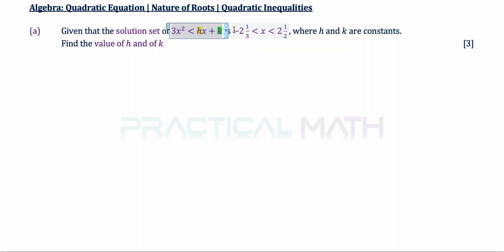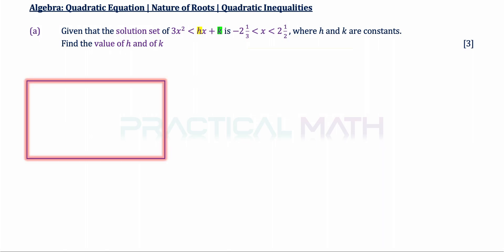Usually we are given a quadratic inequality and we find the solution set. Now we are given a solution set, we work backwards to find the quadratic inequality and do a direct comparison. Before we start Part A, let us first recap on quadratic curve sketching.